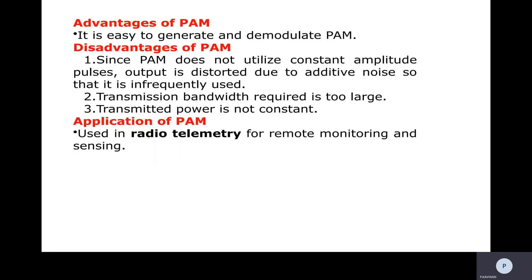Now we will see the advantages, disadvantages, and applications of PAM. The advantage is that PAM is very easy to generate and demodulate compared to remaining methods. The disadvantages are: first, PAM does not utilize constant amplitude pulses so output is distorted due to additive noise, making it infrequently used; second, the transmission bandwidth required is too large; and third, the transmitted power is not constant. For applications, PAM is used in radio telemetry for remote monitoring and sensing.